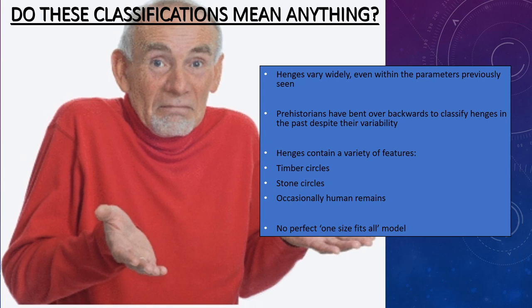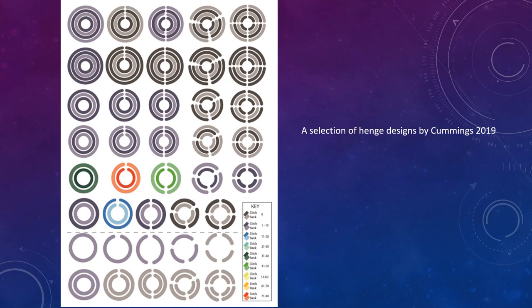In this diagram by Lucy Cummings in her PhD thesis from 2019, you can see a selection of designs of henge monuments. This is just one page — there is another page of these — and this is not all henge monument design across Britain. Try to classify all of these into just those rigid subclasses. I strongly recommend you read Lucy's thesis; you can find it online, it's free. It has really detailed in-depth knowledge of henge monuments and all of these sorts of discussions, and I think we can safely say these subclasses just aren't going to cut it.